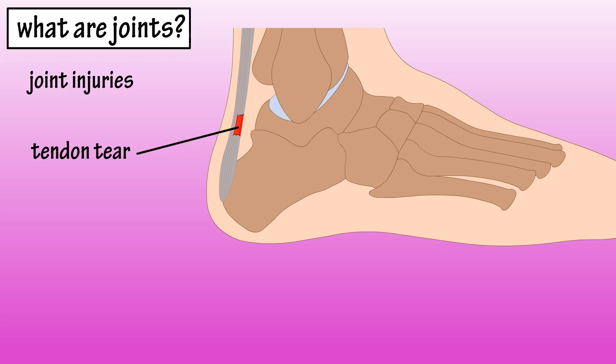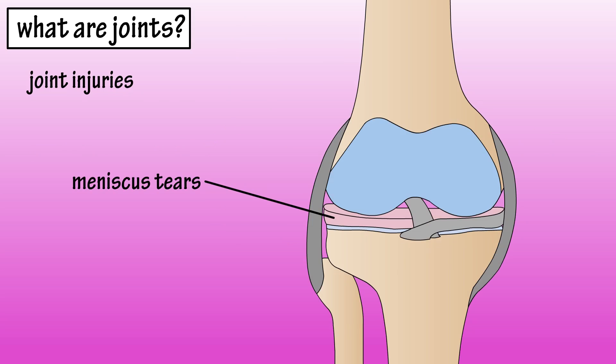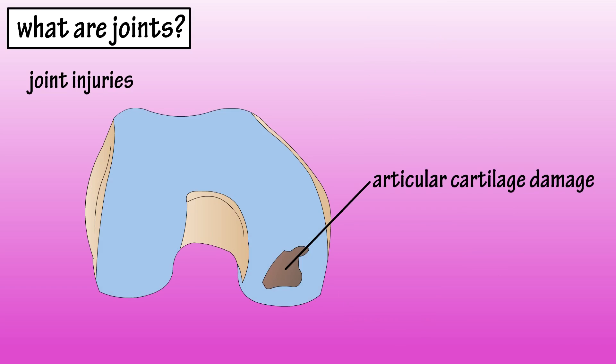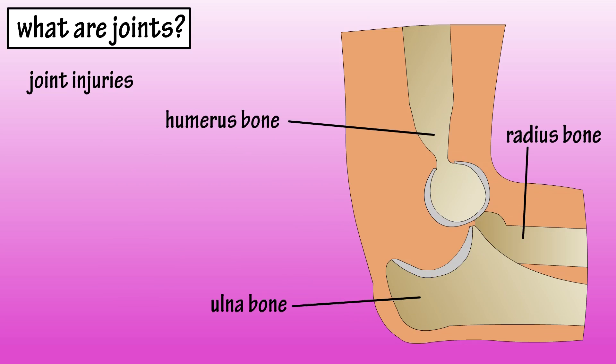Some common joint injuries include ligament or tendon tears, which limits the range of motion of the joint — this is many times caused by overuse or overextension of the joint. Meniscal tears in the knee joint are usually caused by wear and tear over time, and damage to articular cartilage that covers the ends of bones is usually caused by falling directly onto the joint. Joint dislocation can also happen, and that's when a bone slips out of a joint, which is also usually caused by a fall.